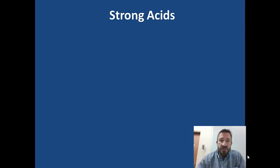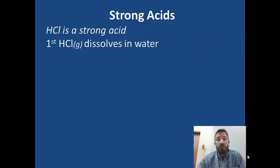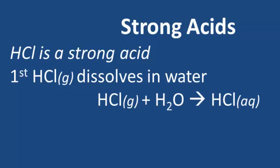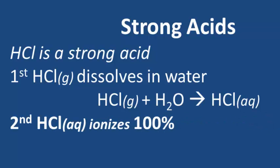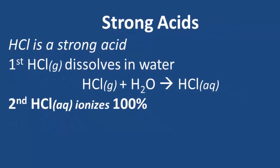What are strong acids? An example of a strong acid is HCl. HCl is hydrogen chloride gas — it's a molecule, and it dissolves in water. What makes HCl a strong acid is that not only does it dissolve in water, but it also ionizes in water.